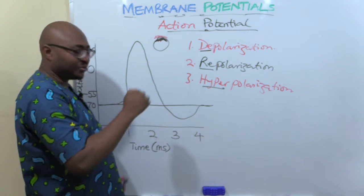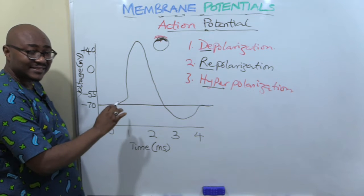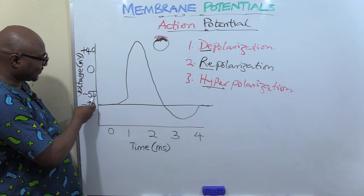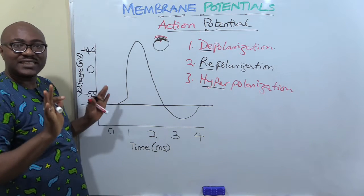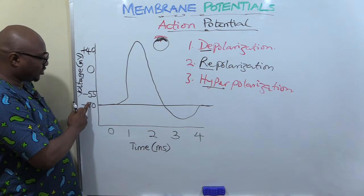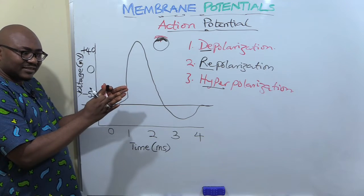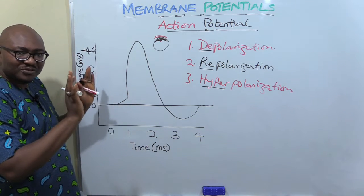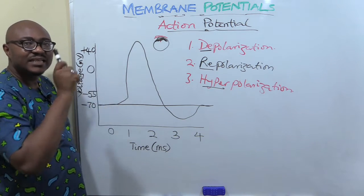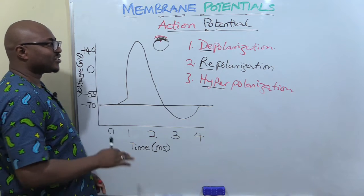Look at the resting membrane potential — minus 70 millivolts. When it becomes less negative, when it gets to zero it means there is no difference at all; the charges on both sides are equal. As it reduces, it is becoming less polarized — that is depolarization. It is making the resting membrane potential less negative. Repolarization comes after depolarization, once the depolarization has reached a point where there is no difference.